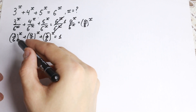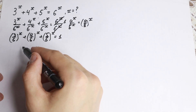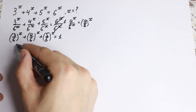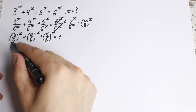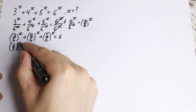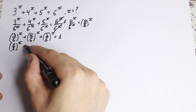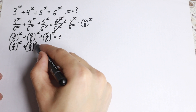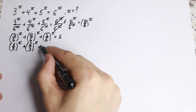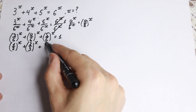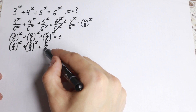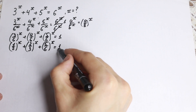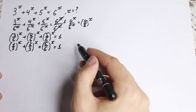We can simplify this a little bit. We can write 3 over 6 as one half, so we have one half to the power x plus 2 thirds to the power x — right here we cannot cancel this — so plus 5 over 6 to the power x, equal to 1.